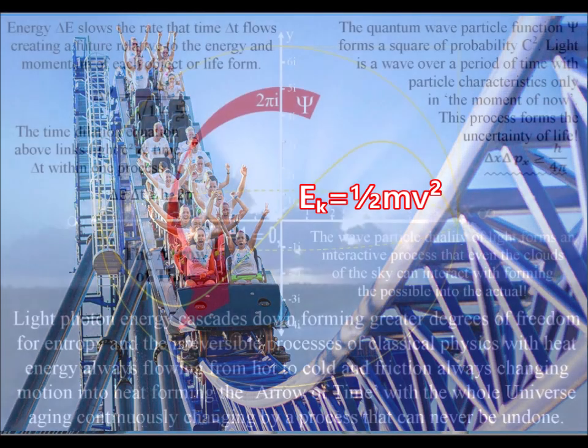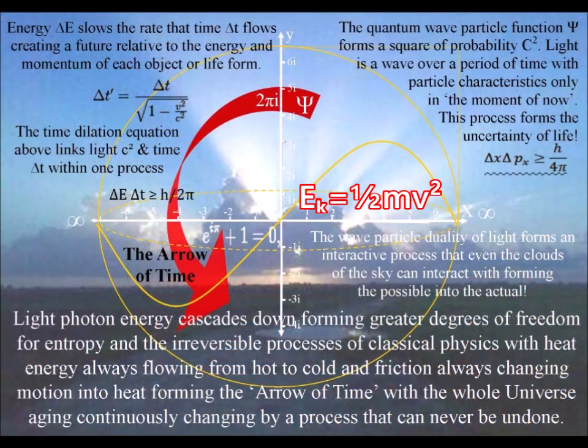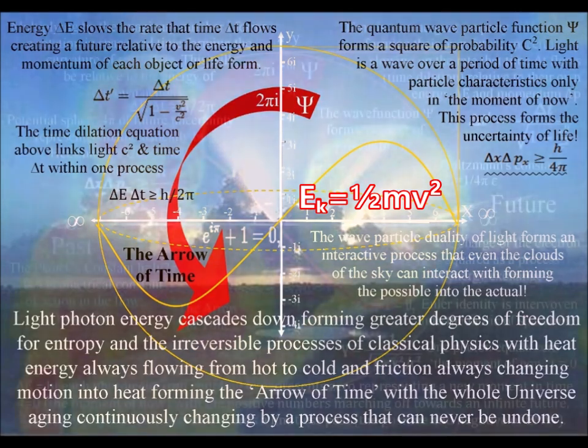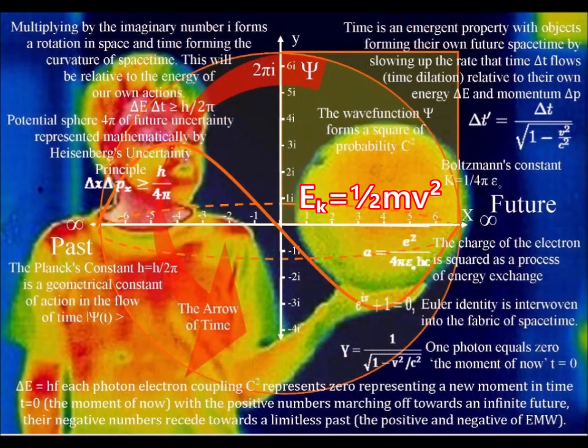We have a continuous process. Spherical symmetry will continuously form and break, and then form again. This process is relative to the energy and momentum of the atoms. Therefore, because we are made of atoms, it is relative to our actions.